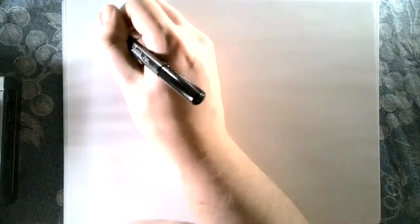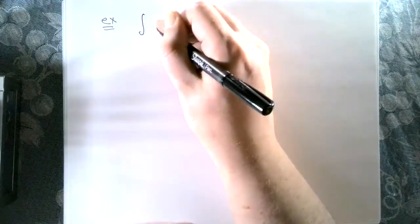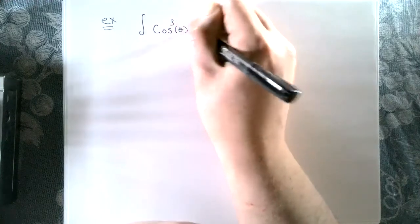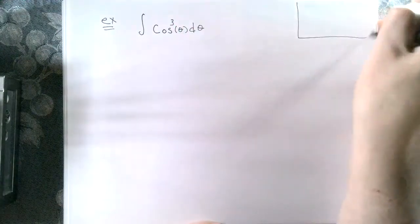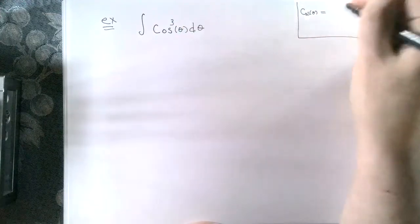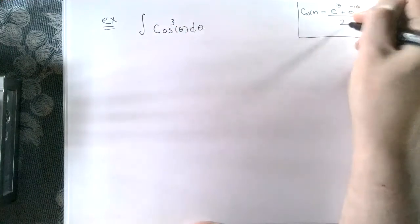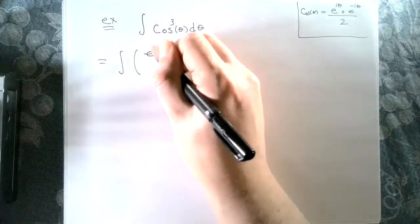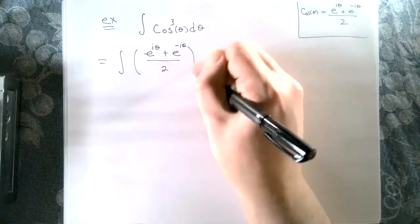Let's look at a neat application. For example, we want to integrate cosine cubed of theta d theta. Recalling that cosine of theta equals e to the i theta plus e to the minus i theta over two, by substitution this becomes the integral of the quantity e to the i theta plus e to the minus i theta over two, all cubed.